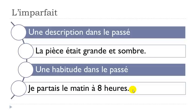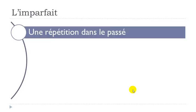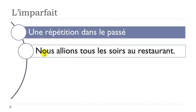Another situation is 'une répétition dans le passé' — a repetition, something that repeats itself in the past. The example: 'nous allions tous les soirs au restaurant' — 'allions' from 'aller' (to go), every evening, at the restaurant. Something you did repeatedly in the past.